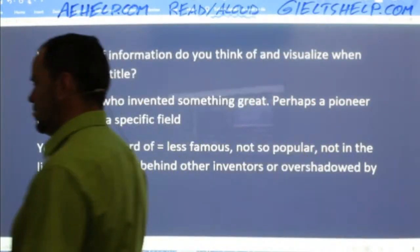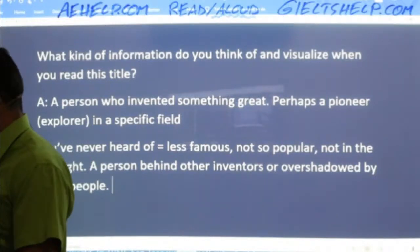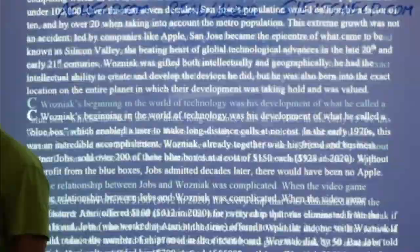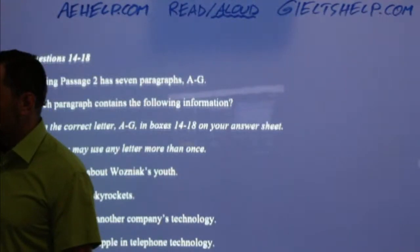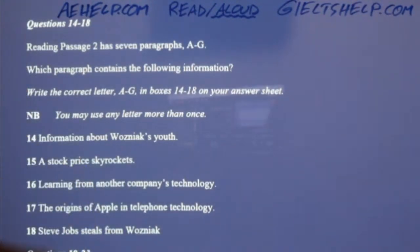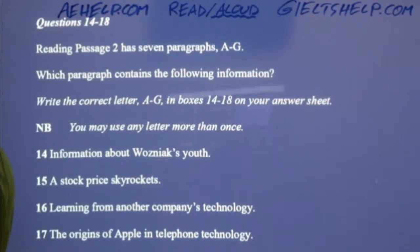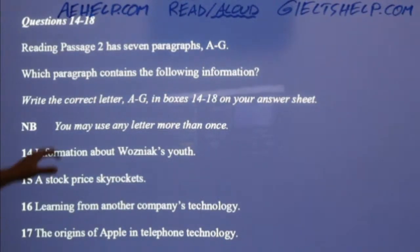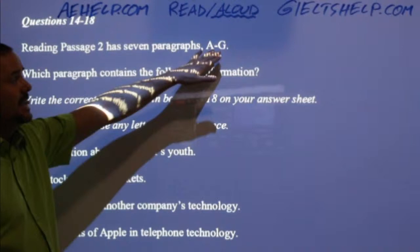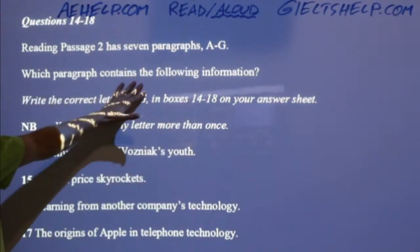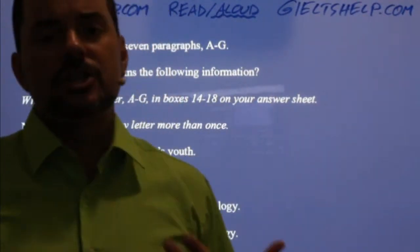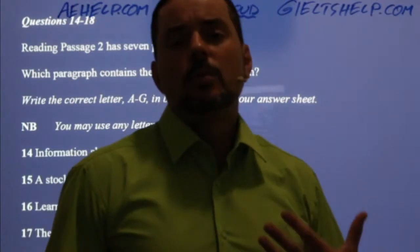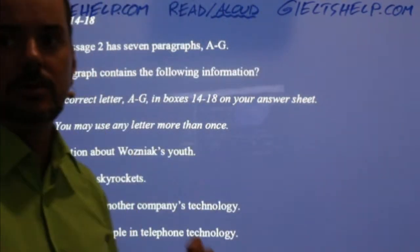So some inventor made a big contribution — a pioneer — but for some reason, not very famous. We have some paragraphs here, all the way to G, and then we look at the questions. Reading passage two has seven paragraphs, A to G. The question type is: 'Which paragraph contains the following information?' You see more and more of these questions where simply skimming and scanning is just not possible — it wastes too much time.